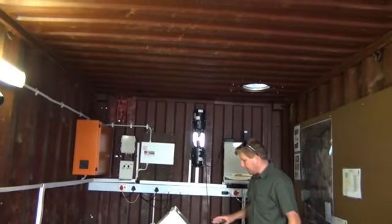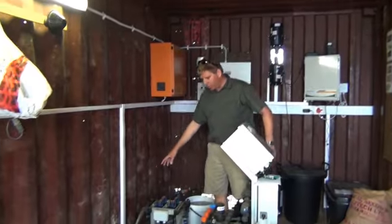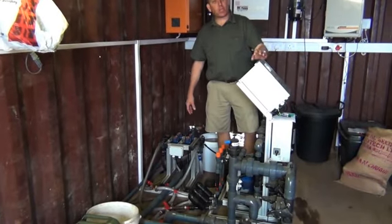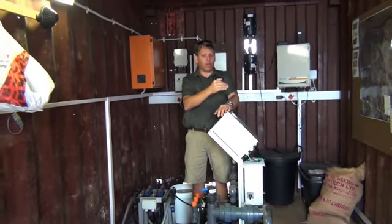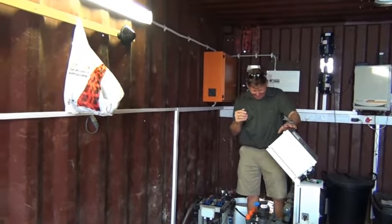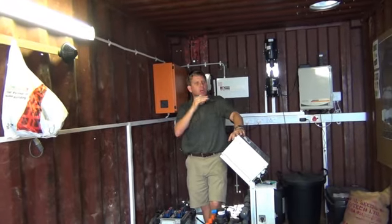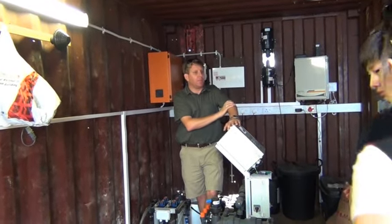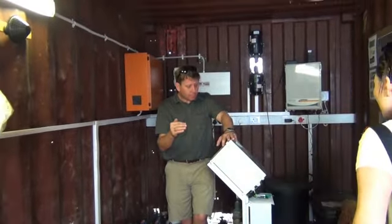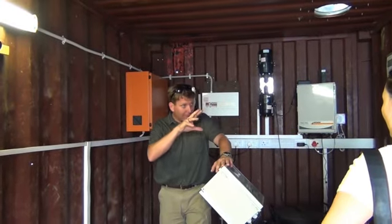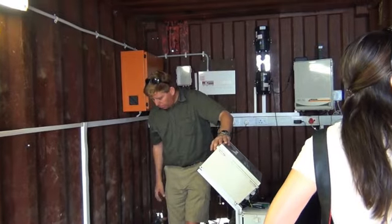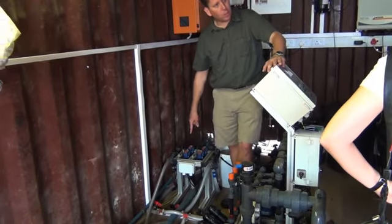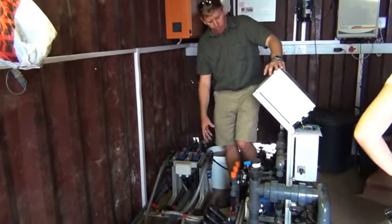Basically what happens is that this unit over here is what we call a selector. So we say to the computer, these plants are young seedlings, we know that they need that certain mixture. So that's what we program into it and the computer will then select the right nutrient for that specific plant.